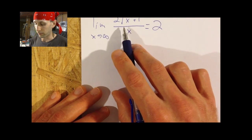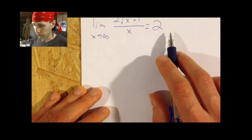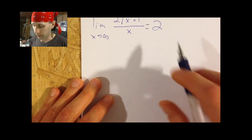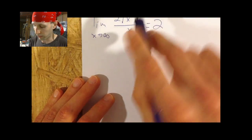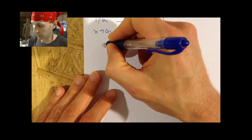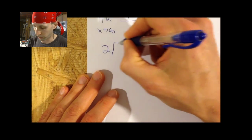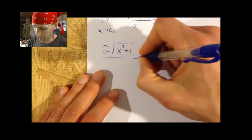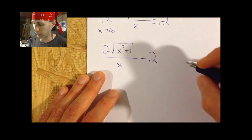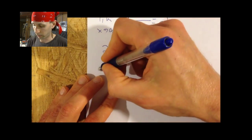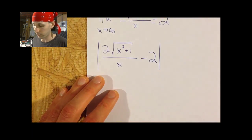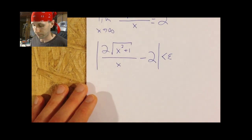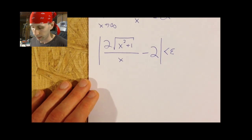We want to show that if the limit is indeed two, then for any epsilon greater than zero there must exist an N such that the absolute value of 2 times the square root of x squared plus one, divided by x, minus two, can be made less than some arbitrarily small quantity epsilon.